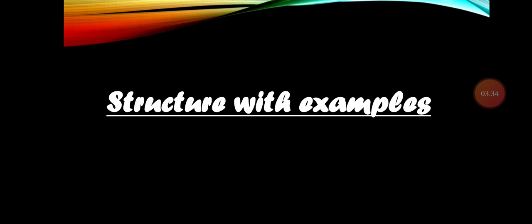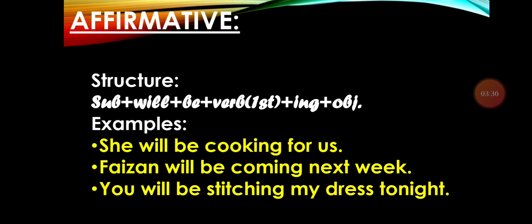Now the affirmative structure with examples. We use: Subject + will + be + verb (first form with -ing) + object. Remember, in Future Indefinite we never use 'be' — 'be' is always used in the Future Continuous tense.